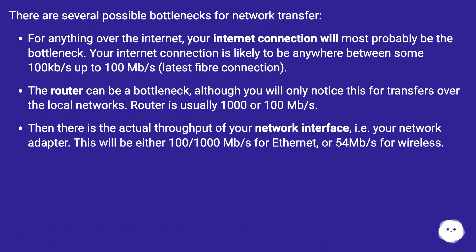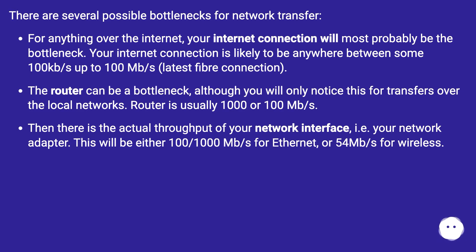There are several possible bottlenecks for network transfer. For anything over the internet, your internet connection will most probably be the bottleneck. Your internet connection is likely to be anywhere between some 100 kilobits per second up to 100 megabits per second for the latest fiber connection. The router can also be a bottleneck, although you will only notice this for transfers over the local network — the router is usually 1000 or 100 megabits per second.